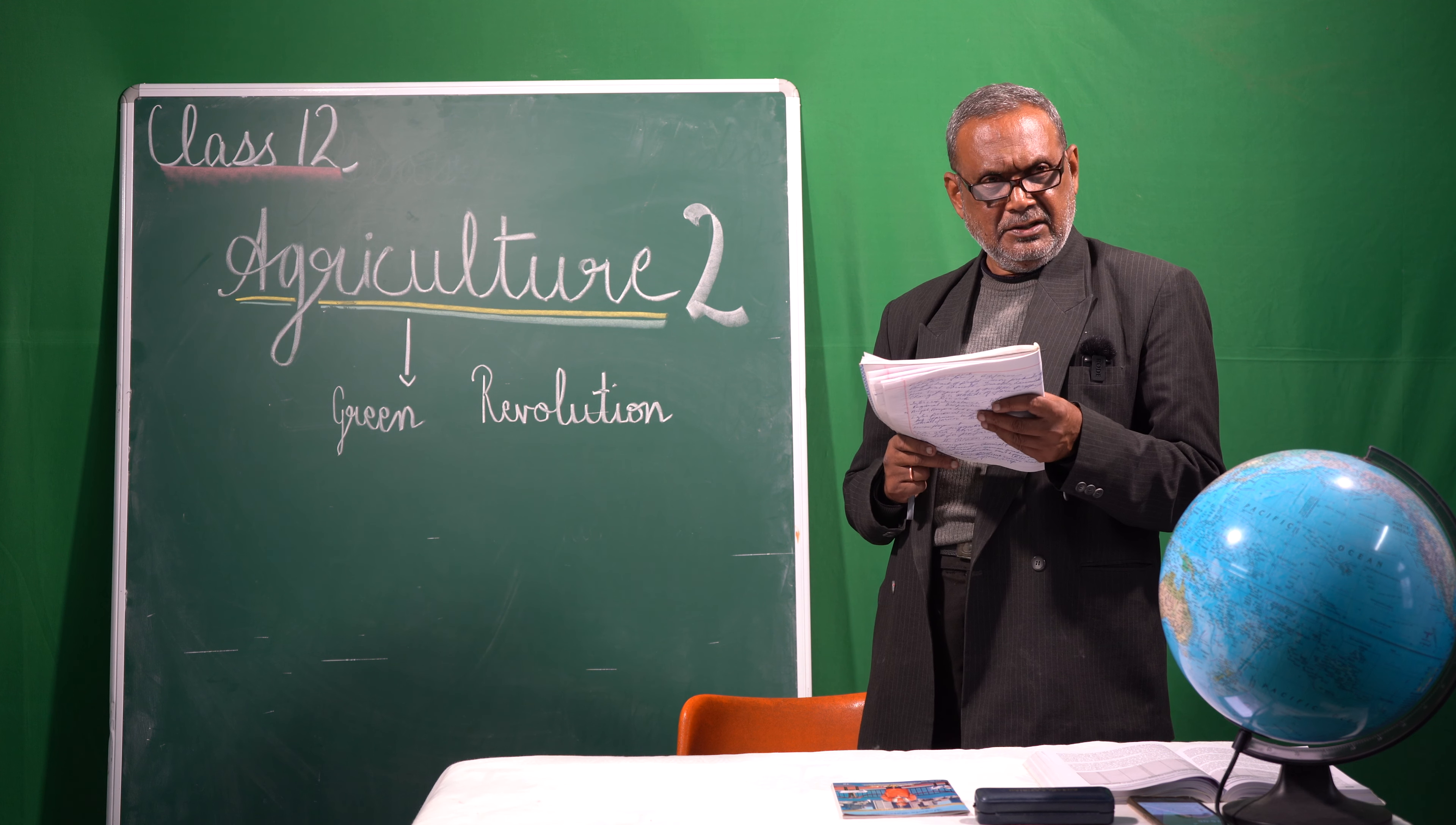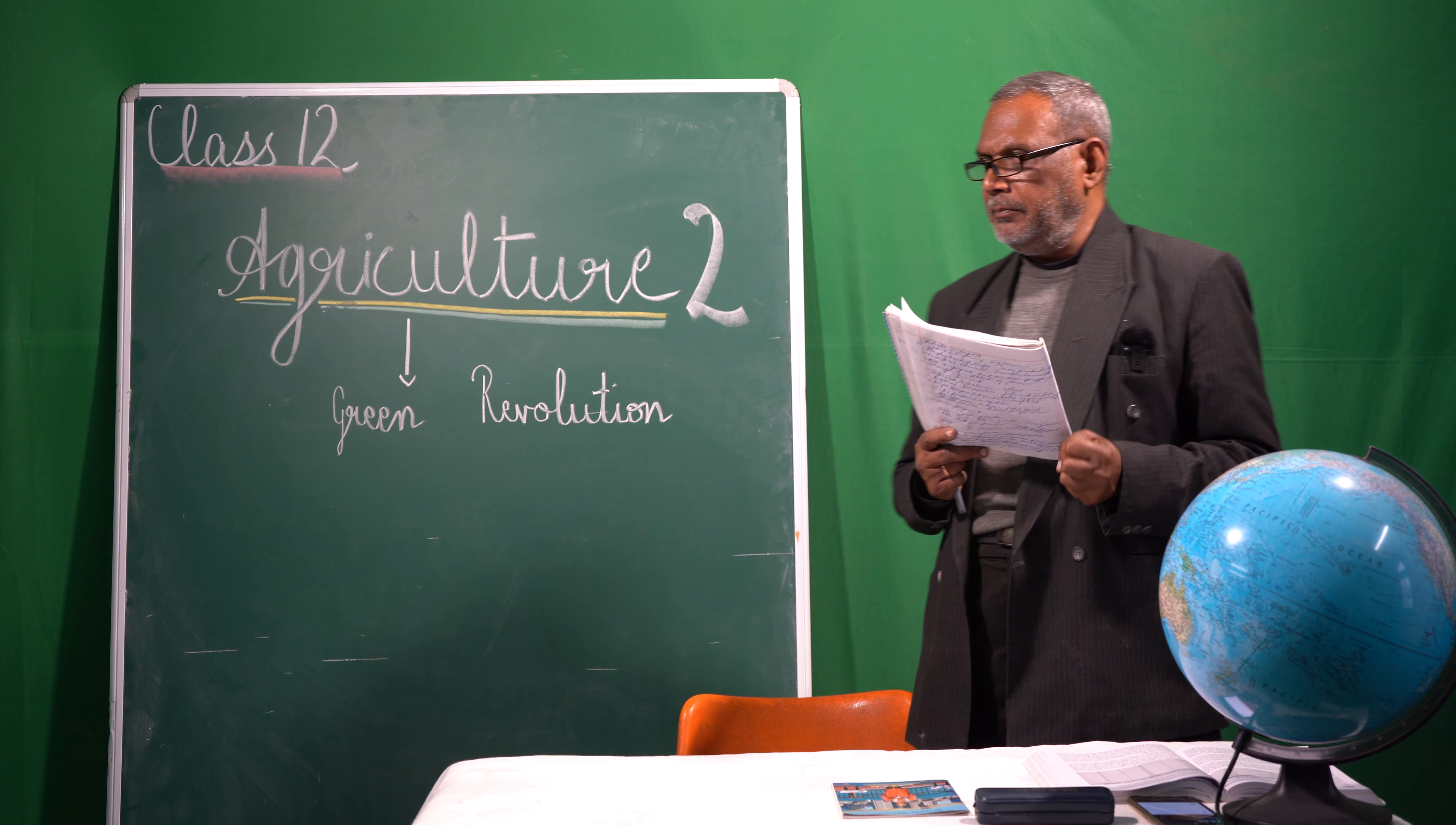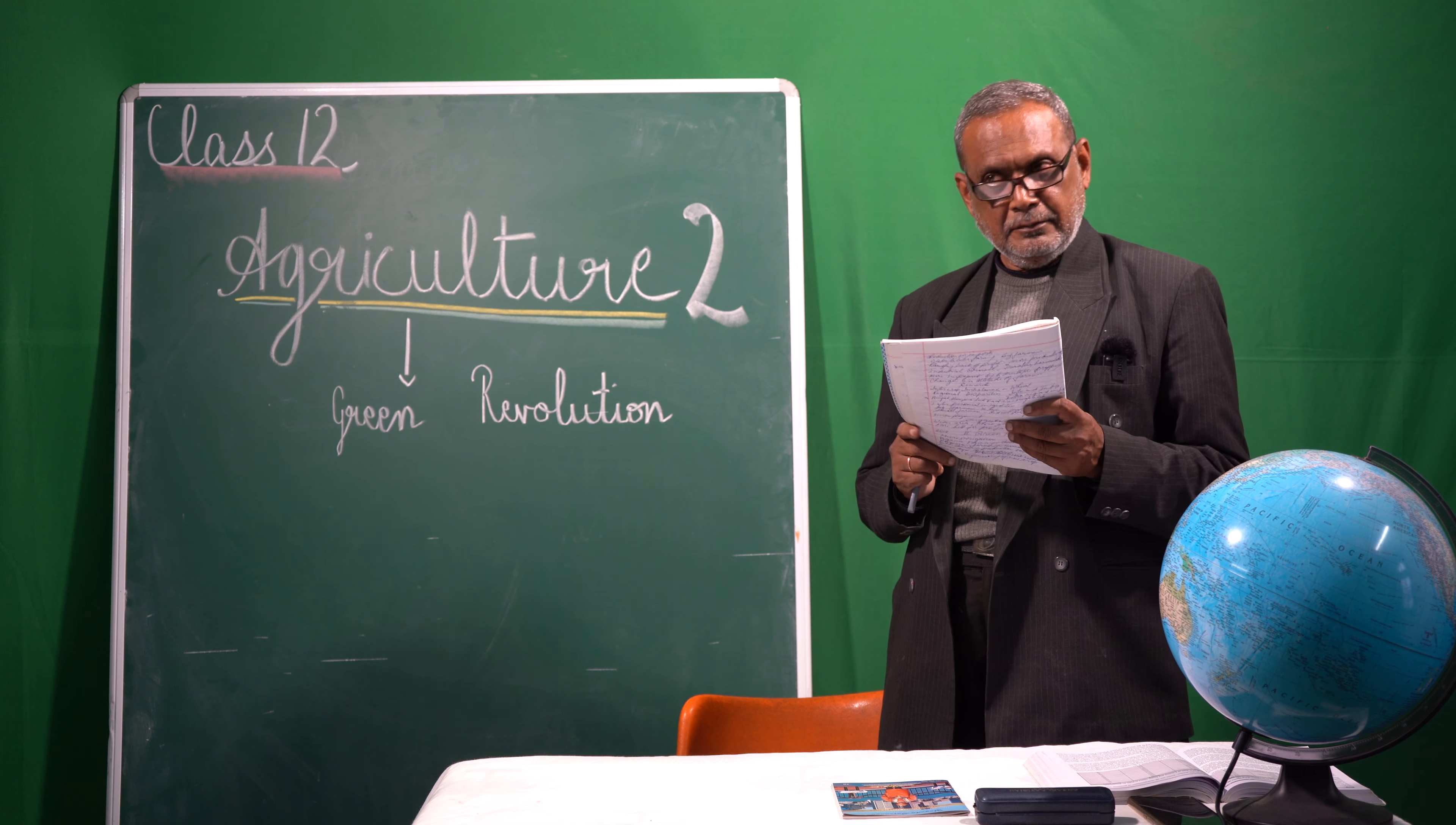Now what were the products of these animal husbandry animals? Milk, meat, hides, and skins. Now this animal husbandry sector actually contributes about 5.3 percent of the GDP. Thank you.